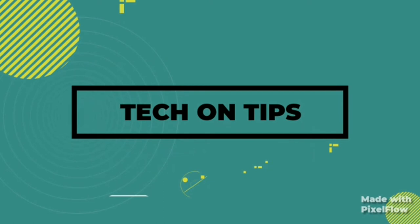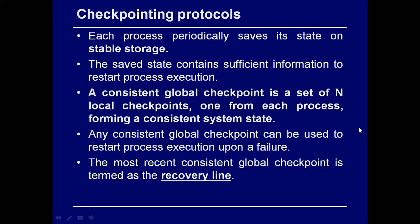In this class we have discussed what is a consistent global checkpoint. We do checkpointing so that if there is a failure, we can restore the system to a previously known error-free state. This is backward recovery. After we finish this, we will do self-stabilizing systems, which are a kind of forward recovery. Going back to a prior state is called the rollback part of recovery.